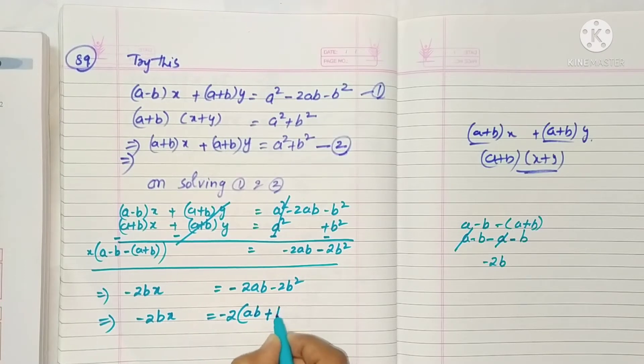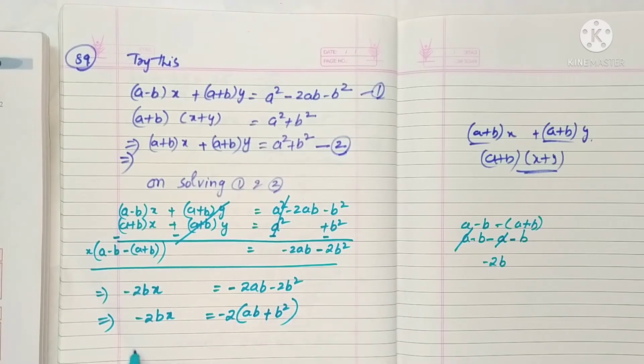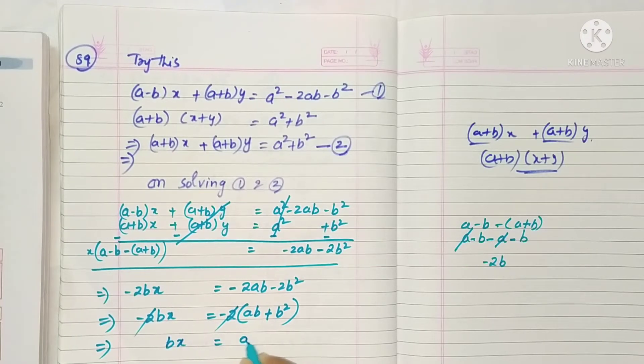So ab plus b², minus times plus is minus 2 times b², 2 into b². So now this minus 2 and minus 2 will cancel. bx is equal to ab plus b².